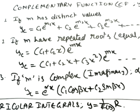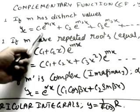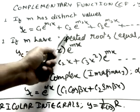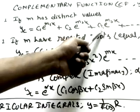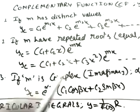In this part, we are going to continue higher order linear differential equations. Before going to the next questions, let me revise the concepts we have already covered in the previous classes. We have done two questions based on complementary functions. If m has distinct values, the complementary function formula is: yc = c1·e^(m1·x) + c2·e^(m2·x), and so on for three values.